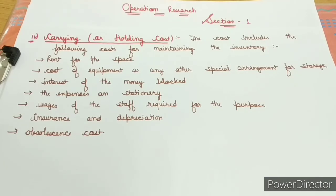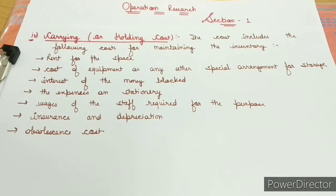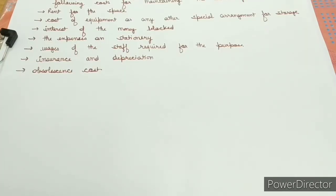If inventory items reduce in value over time they depreciate, and that depreciation is part of the holding cost. Also, if a product becomes obsolete after a certain period of time, an obsolescence cost is also included. These costs depend on the type of inventory we have. After this, the next topic is shortage cost — the last type of inventory-related cost.